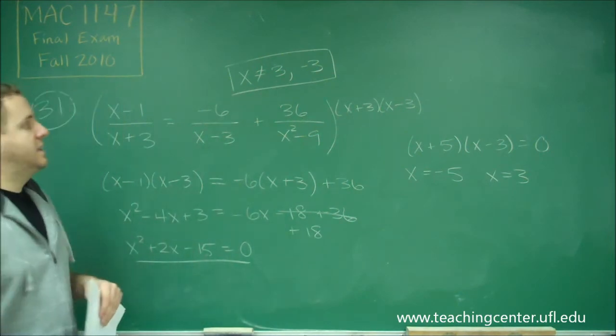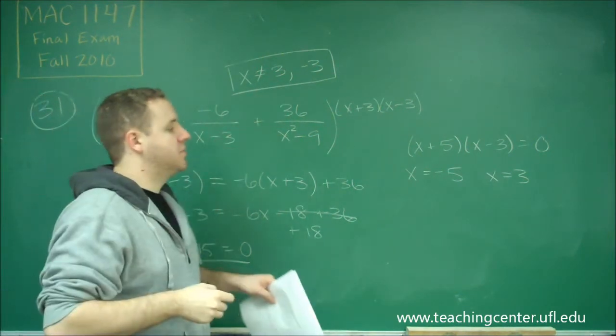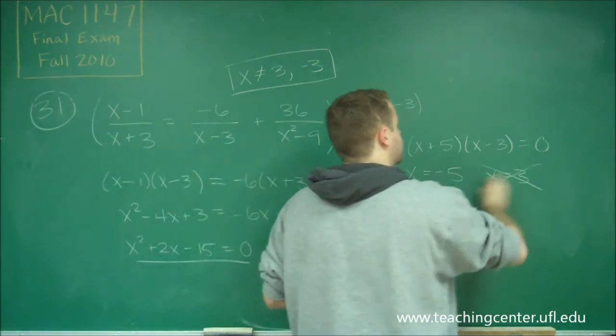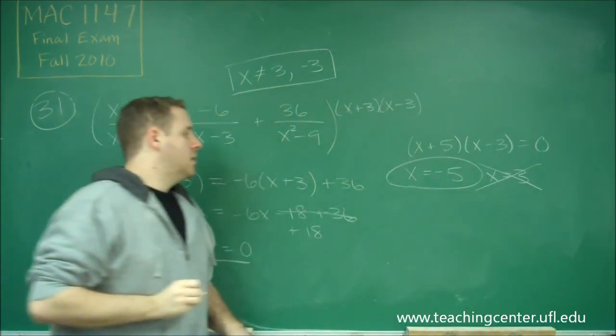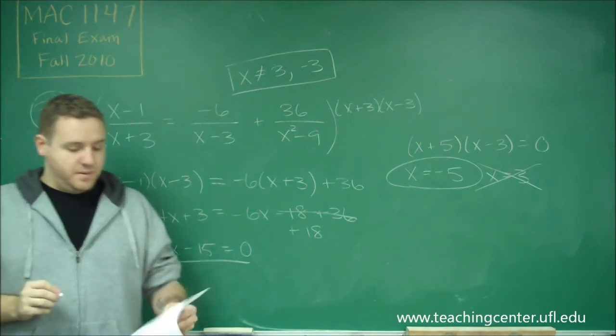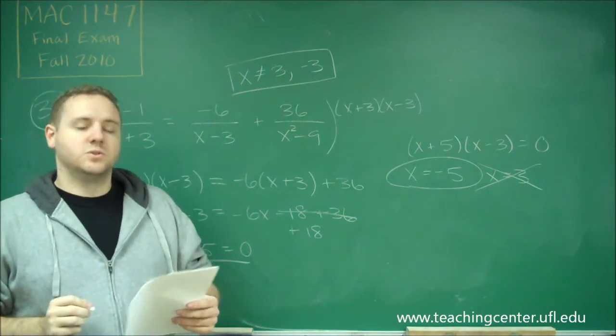However, remember that we said at the beginning x can't be 3 or negative 3. So therefore, this is an extraneous solution. And we only have one answer. Which is x equals negative 5. So that would be then answer choice C.